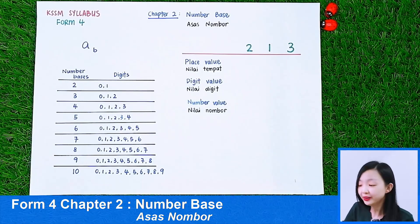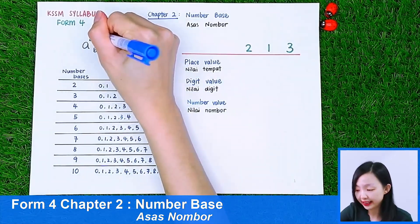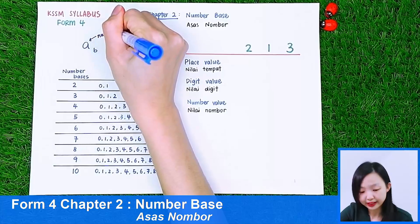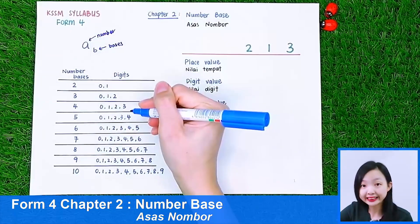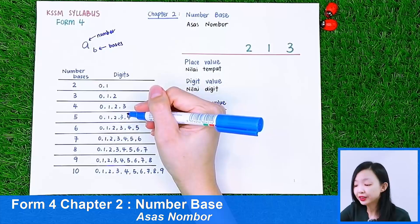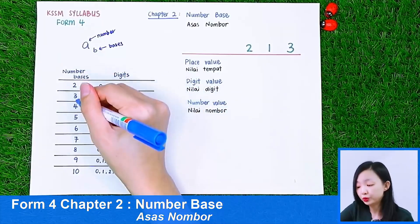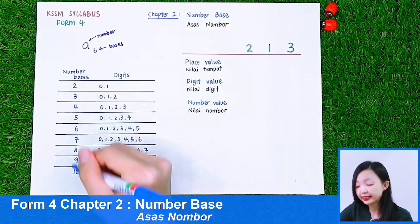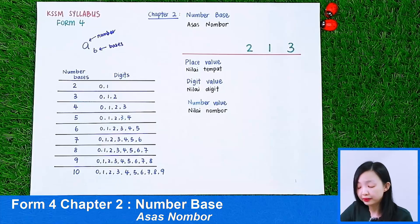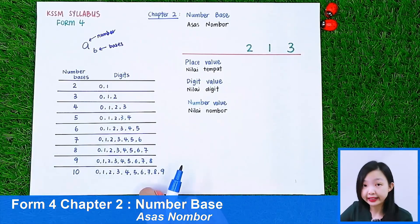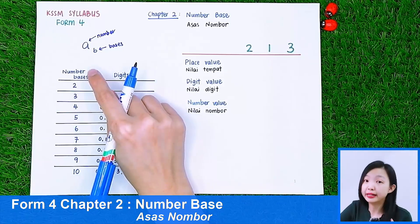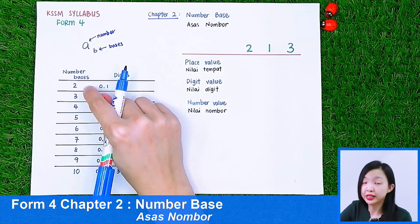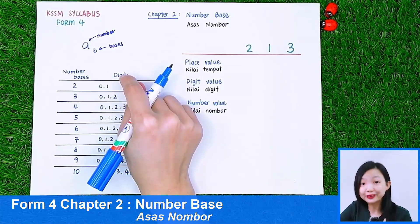So all the numbers here, we call them the number. And this we call the base. So the base can be 2, 3, 4, 5, 6, until 10. The numbers that we know before this are all in base 10. So how about numbers with base 2? All the numbers in number base 2 only have the digits 0 and 1.